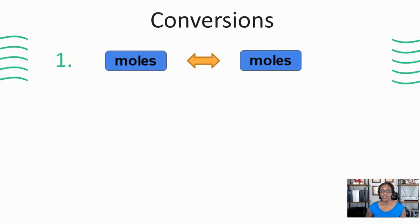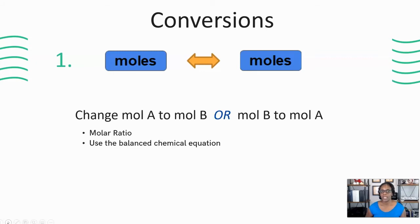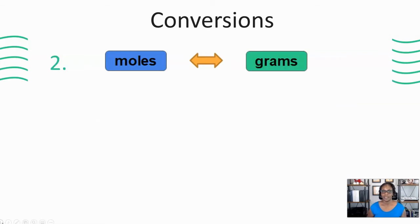The first conversion is when we're converting from moles to moles. Basically, you're provided mole A and asked to convert to mole B, or vice versa. For this one, you're going to use what's called a molar ratio, and we get that information from looking at the balanced chemical equation. The second type of conversion we're going to do today is when we're converting from moles to grams or grams to moles.